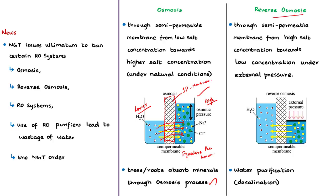Now let us see the reverse osmosis process. The exact opposite of osmosis is reverse osmosis. In case of reverse osmosis, an external pressure is applied to overcome the osmotic pressure. Because of this external pressure, the water is forced to move through the semi-permeable membrane from an area of higher salt concentration to an area of lower salt concentration, as you can see in this picture.